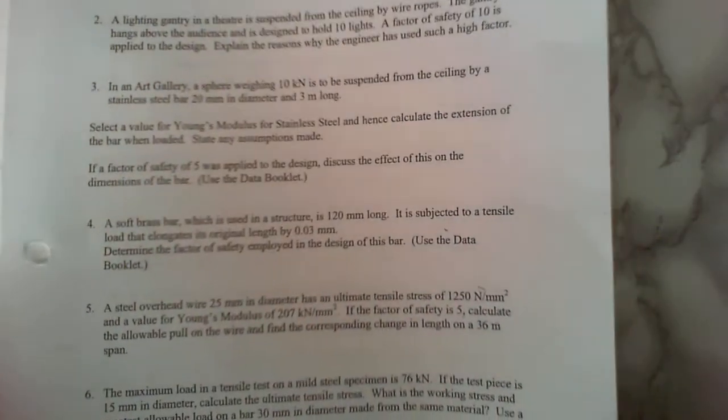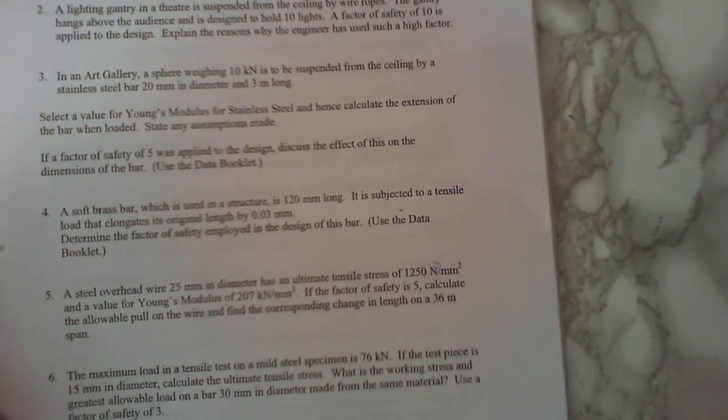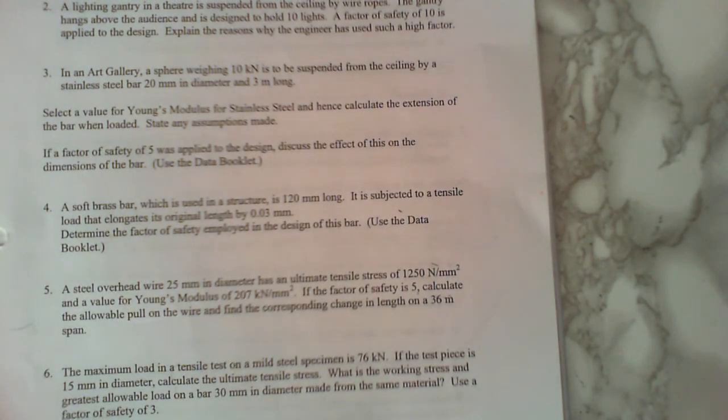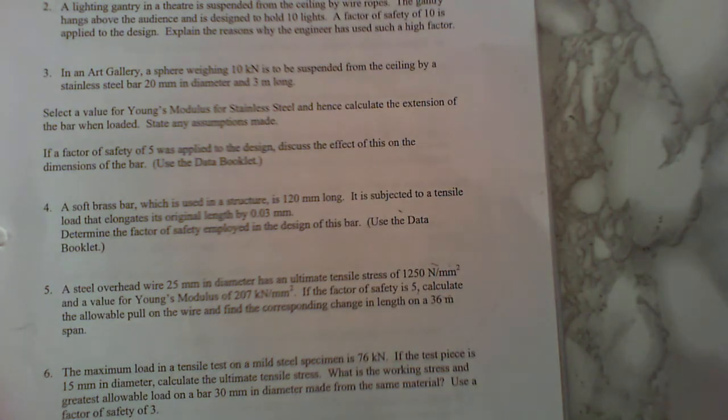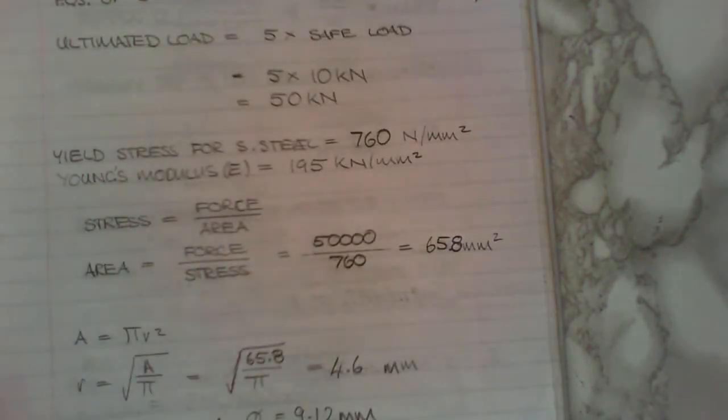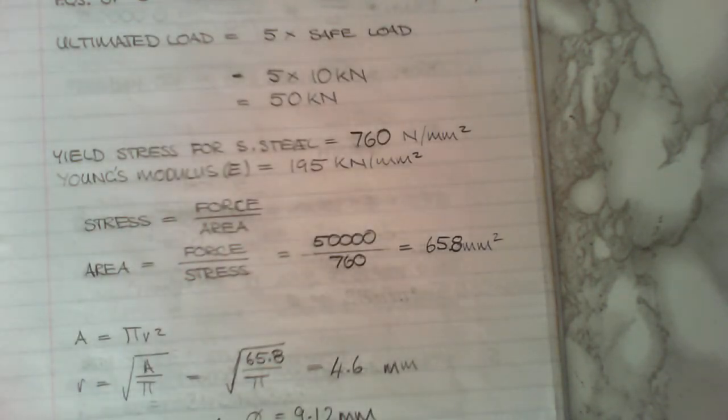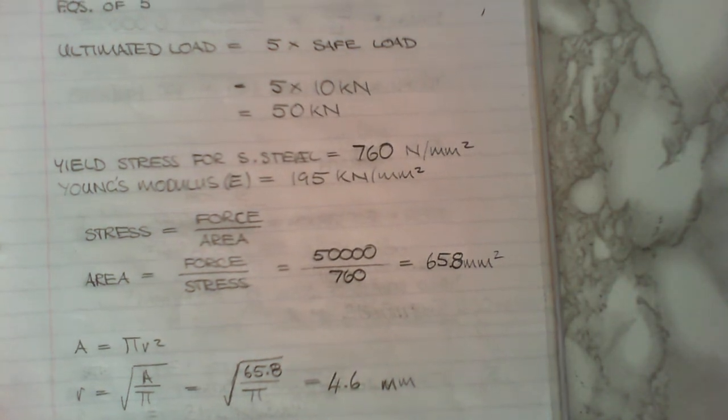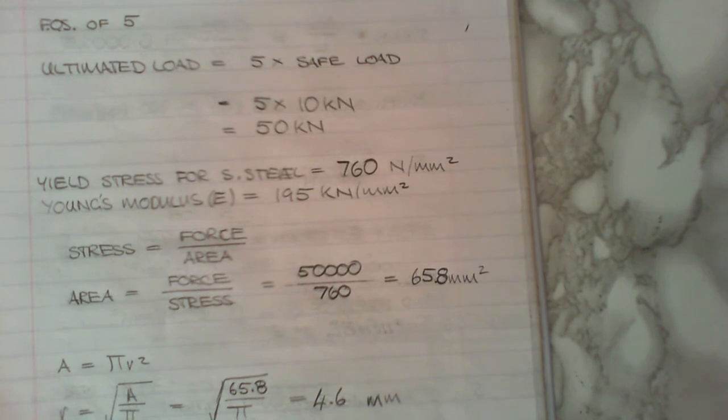Right, let's look at the next stage. So it says next, if a factor of five was applied to the design, discuss the effect on the dimension of the bar. Now, on the face of it you have to discuss something, but it's not. You actually have to do a calculation and then say what you think.